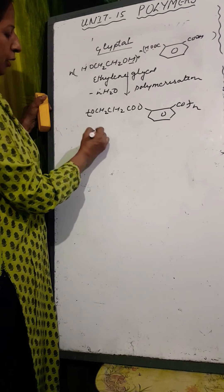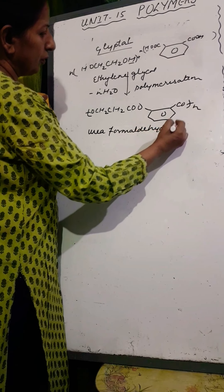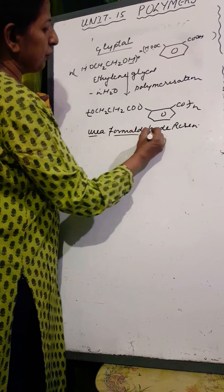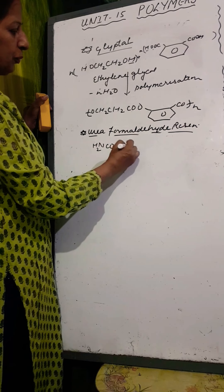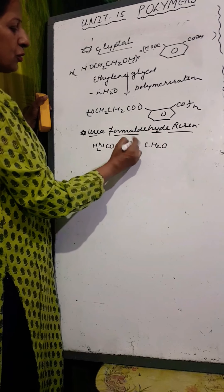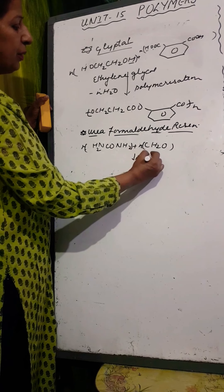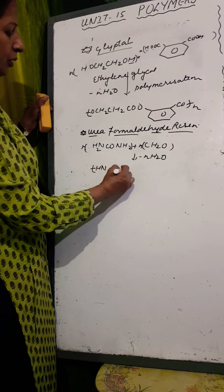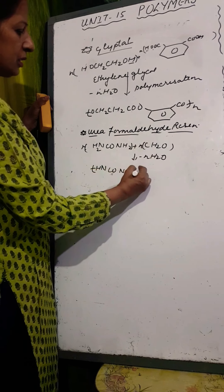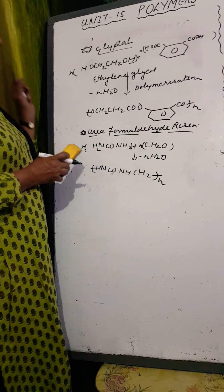Another important polymer is urea formaldehyde resin. As the name indicates, its monomers are urea (NH2-CO-NH2) and formaldehyde (CH2O). N units of both undergo condensation with elimination of N times water. The polymer formed is: -NH-CO-NH-CH2- repeated N times. This is urea formaldehyde resin, another very important polymer.